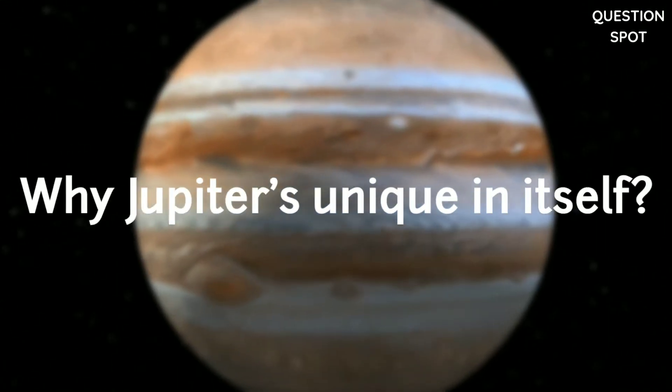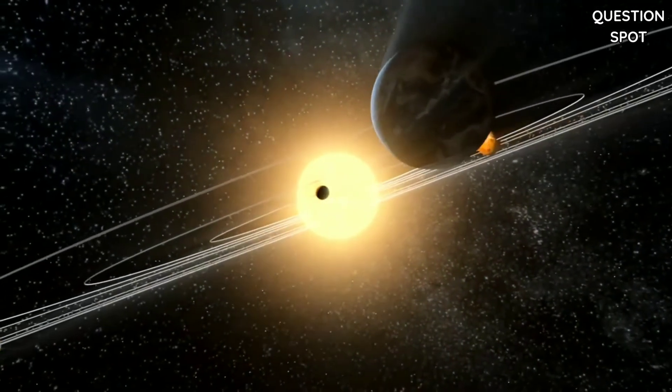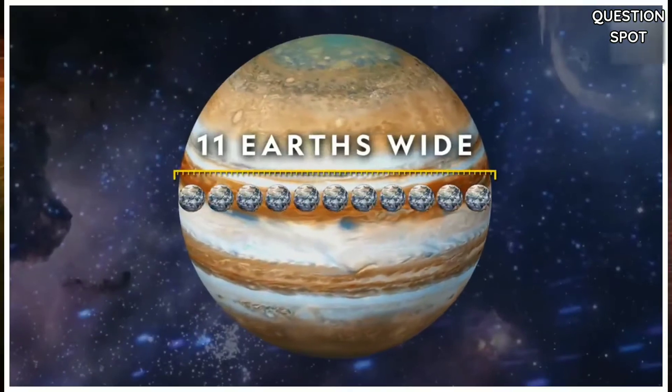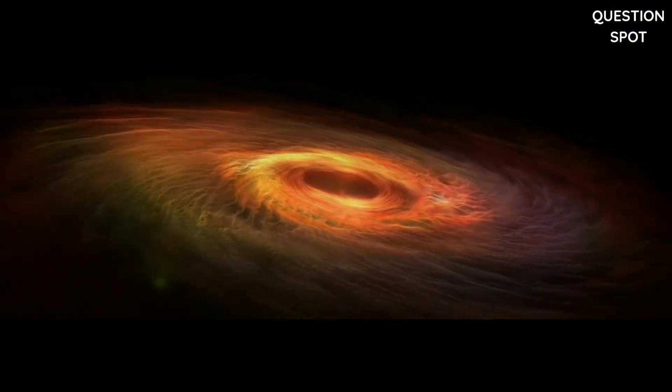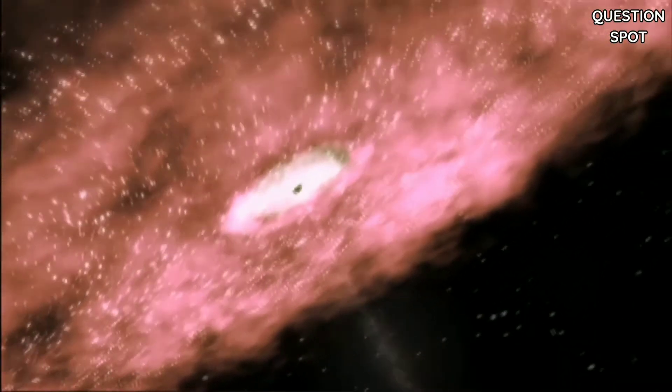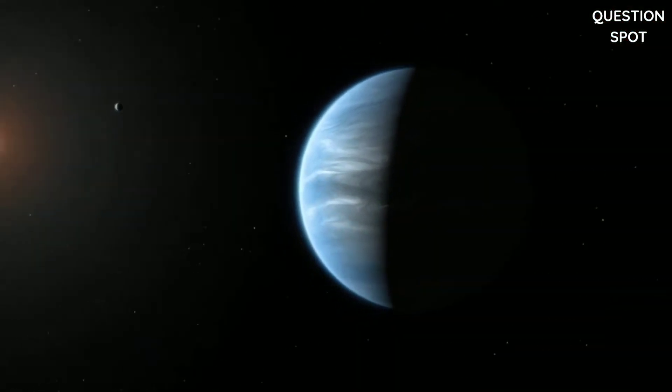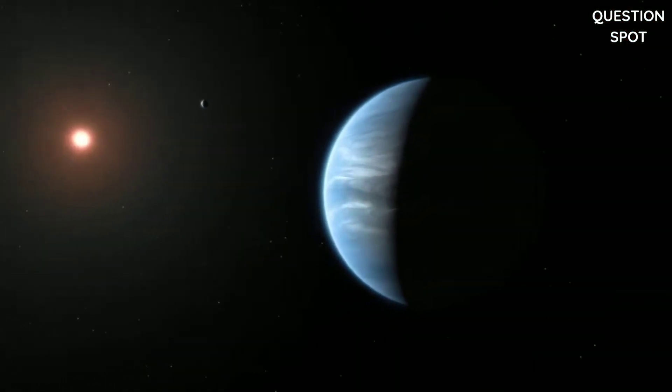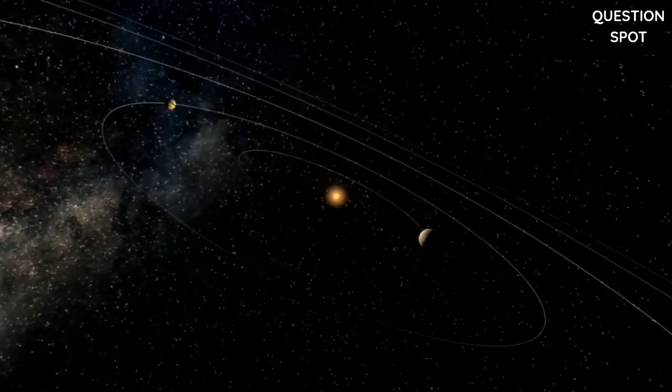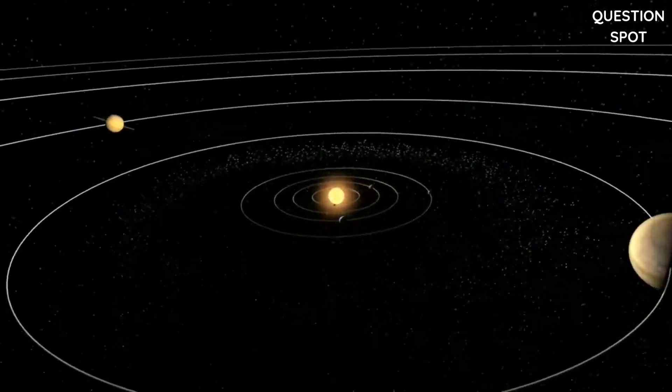Why is Jupiter unique in itself? Unlike other solar systems in the observable universe, Jupiter is much farther away from the host star, the sun. Jupiter is the largest planet in the solar system, having great gravitational force. In other solar systems, large planets having greater mass and volume are generally closer to their host star than smaller planets. But in our solar system, Mercury is closest to the sun, which makes our solar system unique.